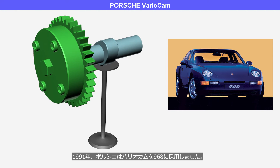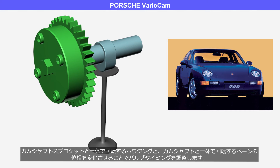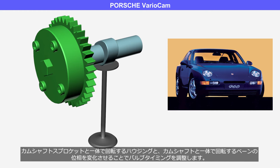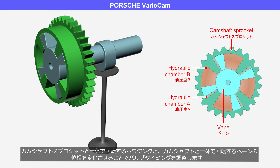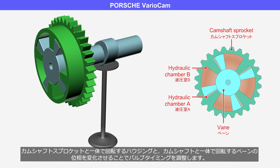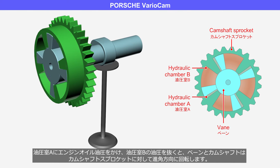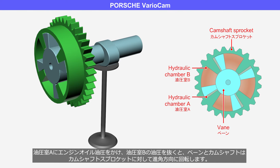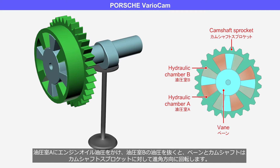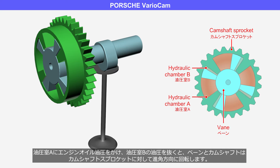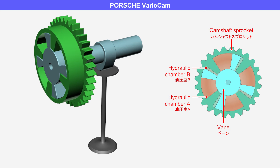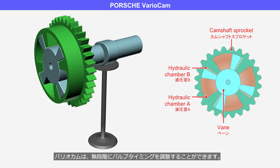In 1991, Porsche adopted the VarioCam for the 968. The valve timing is adjusted by changing the phase between the housing that rotates together with the camshaft sprocket and the vane that rotates together with the camshaft. When applying engine oil pressure to hydraulic chamber A and releasing the oil pressure in hydraulic chamber B, the vane and camshaft rotate in the advanced direction relative to the camshaft sprocket. The VarioCam allows for continuous variable adjustment of the valve timing.